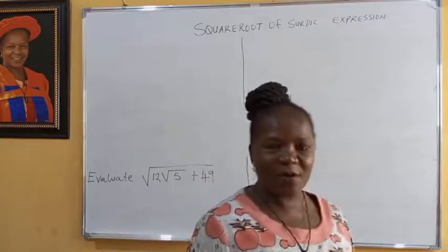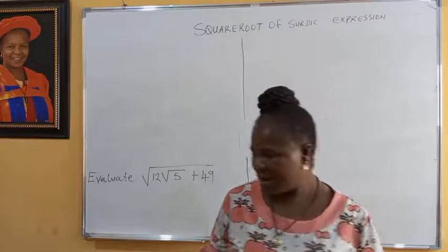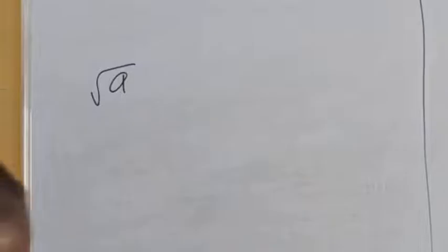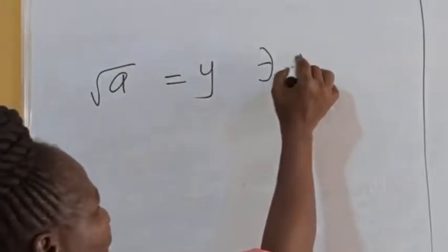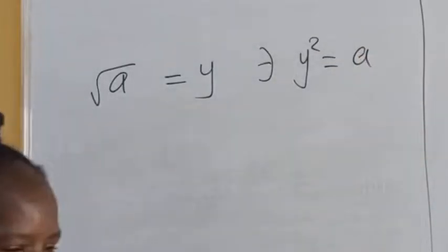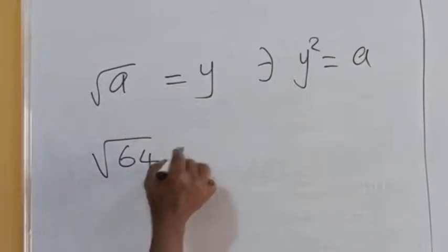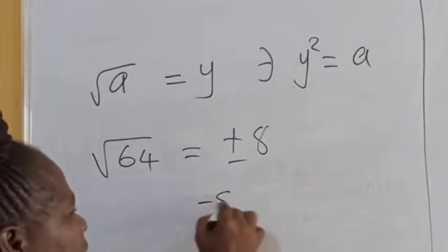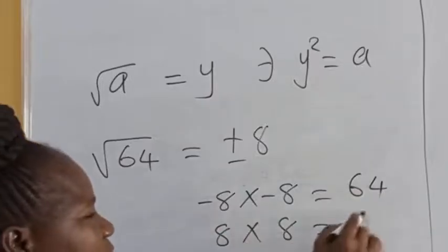We first of all ask ourselves: what do we mean by square root? If you are given a real number a and you want to get the square root of a, by square root of a you mean that number y such that y squared is equal to a. For example, we know that the square root of 64 is equal to plus or minus 8, because minus 8 times minus 8 is equal to 64, and 8 times 8 is equal to 64.